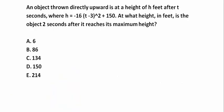An object thrown directly upward is at a height of h feet after t seconds, where h equals minus 16 times t minus 3 to the power of 2 plus 150. So here we have h = -16(t-3)² + 150.